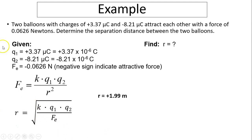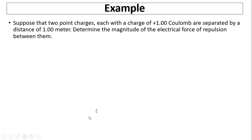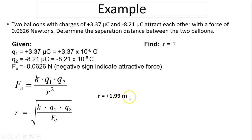Two balloons with charges of 3.37 microcoulombs and negative 8.21 microcoulombs attract each other with a force of 0.0626 newtons. Determine the separation distance between the two balloons. Micro means 10 to the negative 6. You need to find R. Solving the equation for R: R equals the square root of K times Q1 times Q2 divided by Fe. After substituting all the quantities, you get 1.99 meters.